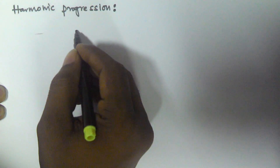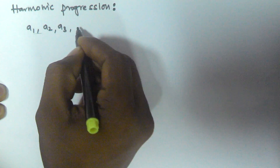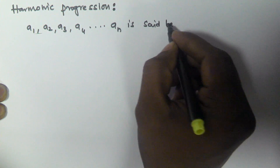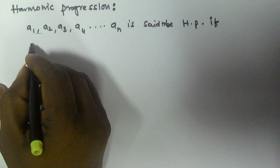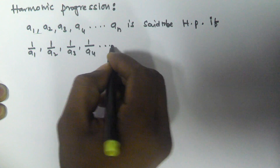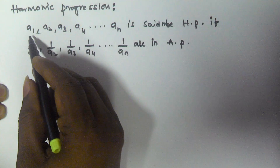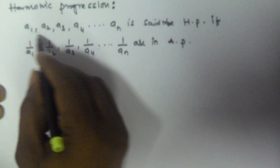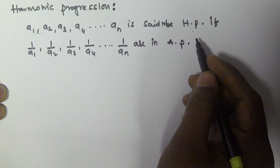In this video we will see what is harmonic progression. A series of quantities a1, a2, a3, a4, and so on up to an is said to be in harmonic progression if the reciprocals of these numbers — 1/a1, 1/a2, 1/a3, 1/a4, and so on up to 1/an — are in arithmetic progression.